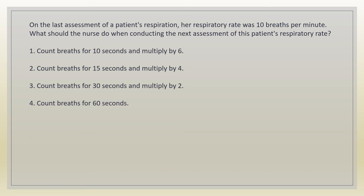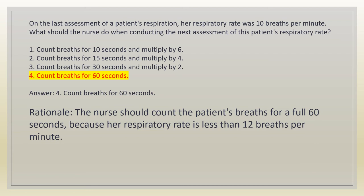On the last assessment of a patient's respiration, her respiratory rate was 10 breaths per minute. What should the nurse do when conducting the next assessment? 1. Count breaths for 10 seconds and multiply by 6. 2. Count breaths for 15 seconds and multiply by 4. 3. Count breaths for 30 seconds and multiply by 2. 4. Count breaths for 60 seconds. Answer: 4. Count breaths for 60 seconds. Rationale: the nurse should count a patient's breaths for full 60 seconds because her respiratory rate is less than 12 breaths per minute.